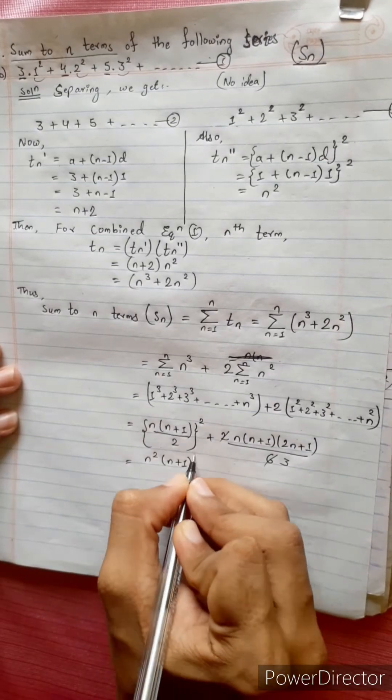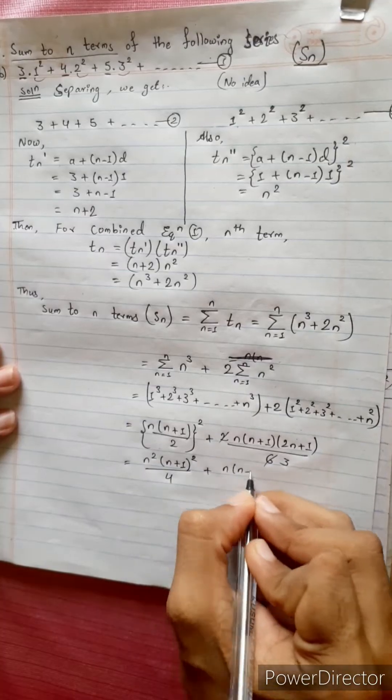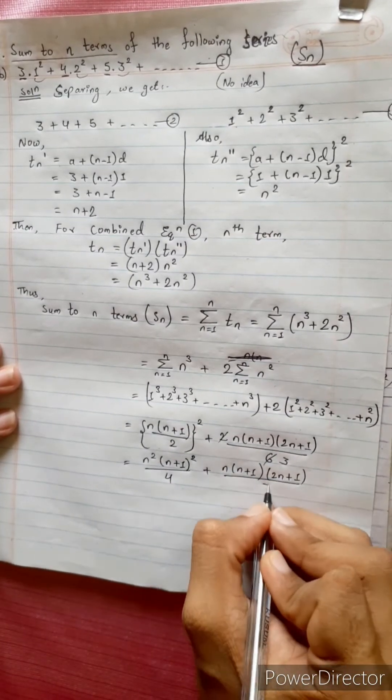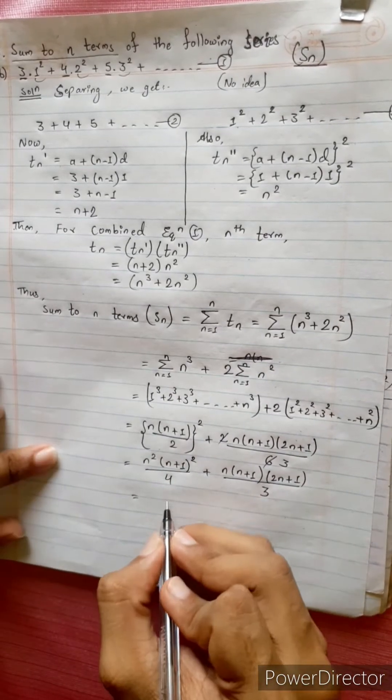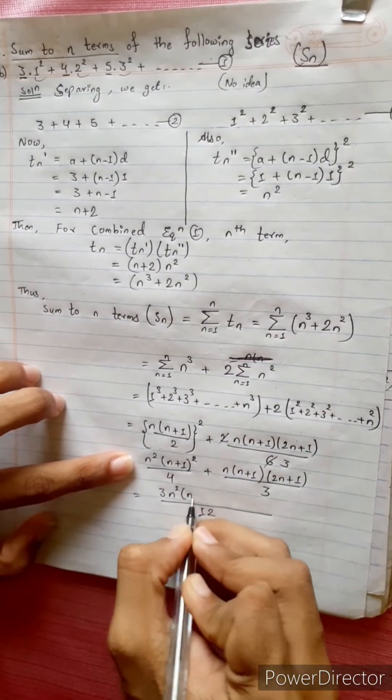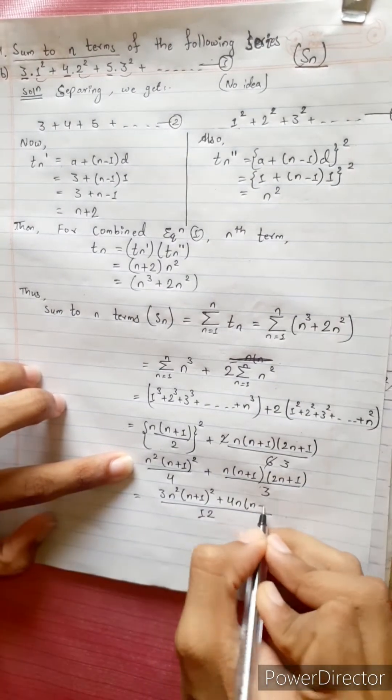This becomes n square times n plus 1 square divided by 4, plus 2 times n times n plus 1 times 2n plus 1 divided by 6.